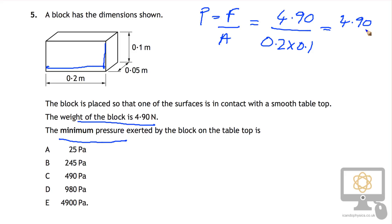So it's 4.90 divided by 0.02. And if you do that calculation, you get 245. And so that is the pressure, the minimum pressure that the block can possibly exert.